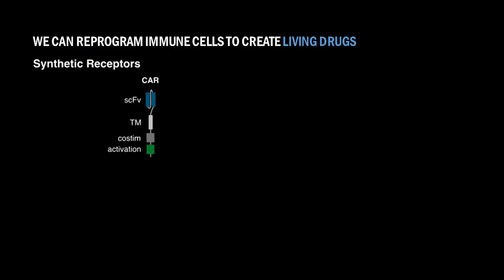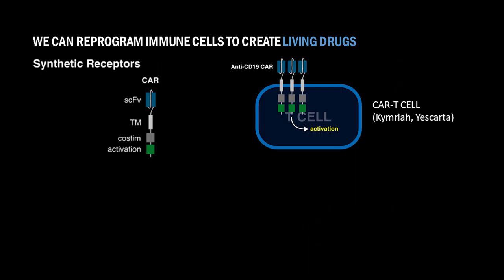Recently, chimeric antigen receptor T-cell therapy was developed with this principle in mind. For CAR T-cells, an ectopic receptor called a CAR can be expressed within a T-cell scaffold to redirect its killing and activation programs against an arbitrary antigenic epitope. This technology has led to revolutionary therapies for the treatment of B-cell cancers and two drugs currently on the market.